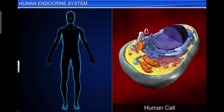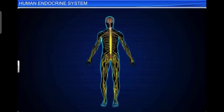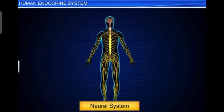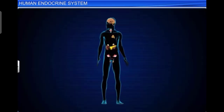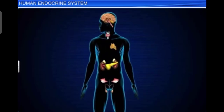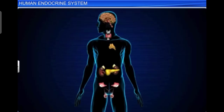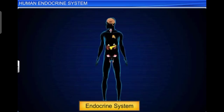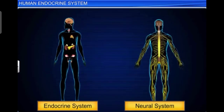The function of cells in the human body needs to be continuously regulated. However, nerve fibers of the neural system do not innervate all cells of the body. Therefore, the function of regulating body cells is performed by hormones secreted by the endocrine glands. The neural system and the endocrine system jointly coordinate and regulate the physiological functions of the body, and are collectively known as the neuro-endocrine system.